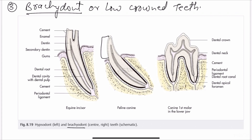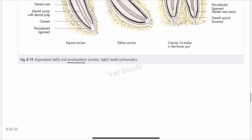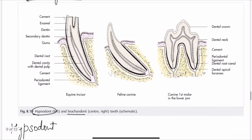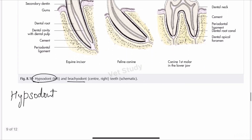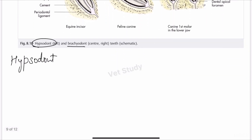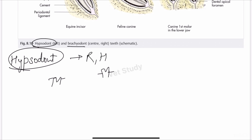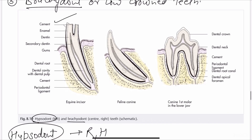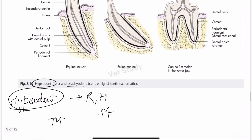The next terminology is hypsodont. Hypsodont is a condition where part of the body of the tooth occurs below the gingiva. The difference between brachydont and hypsodont is that in brachydont the body is above the gingiva, whereas in hypsodont the body is below the gingiva. This type of teeth is present in horses and ruminants.